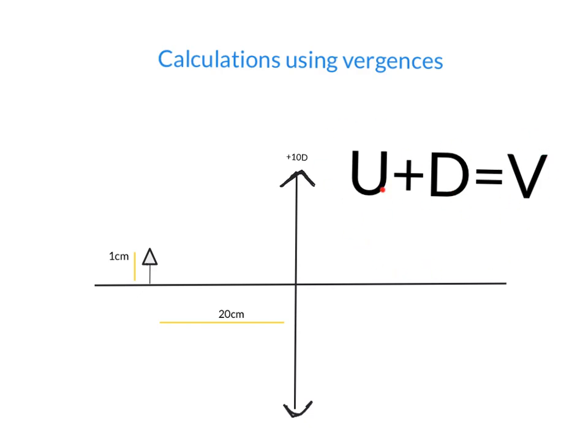The U is the vergence of the object. The D is the power of the lens and the V is the vergence of the image.